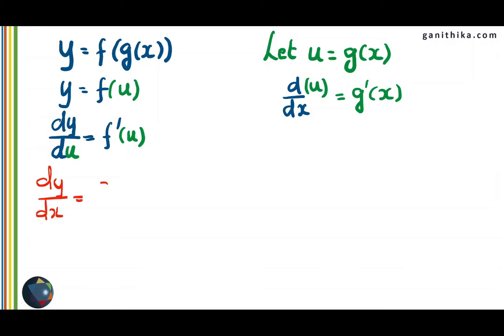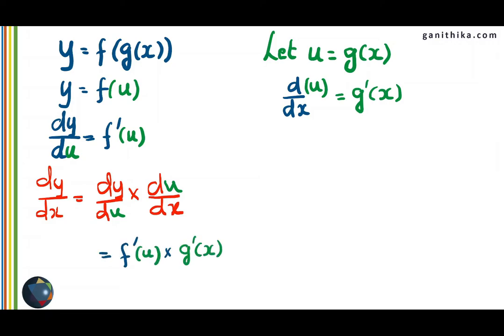Now if I want to find dy over dx, which is the derivative of y with respect to x, I can use this product dy over du multiplied by du over dx, which means the du gets cancelled and you will get dy over dx. We have dy over du as f dash of u and du over dx as g dash of x. But this u is actually g of x, therefore we should have f dash of g of x multiplied by g dash of x. f dash of g of x is the derivative of f with g of x inside, and g dash of x is the derivative of the inner function g of x.